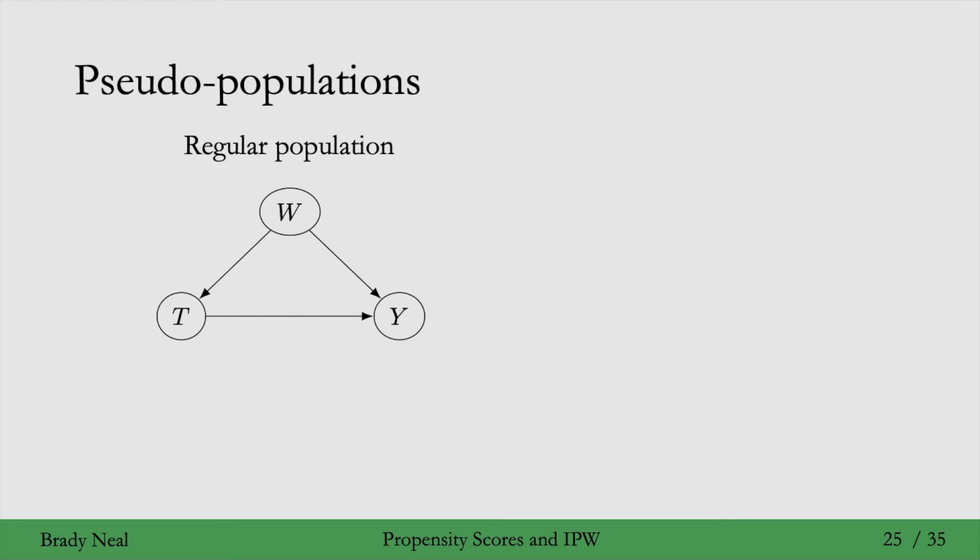Consider a regular population where W is a confounder of the effect of T on Y. One way to see why association is not causation is that we have a backdoor path from T to W to Y because we have this edge W to T. We have this edge W to T because the conditional distribution of T given W is not just equal to P(T). T actually depends on W. We need to keep W behind the conditioning bar here.